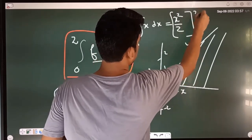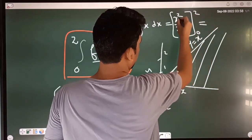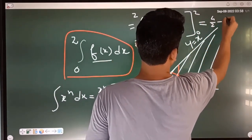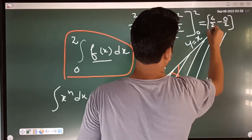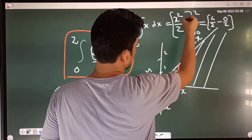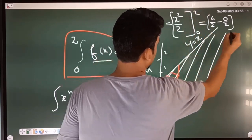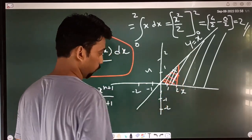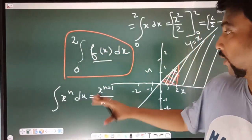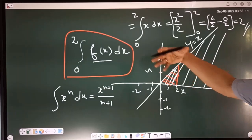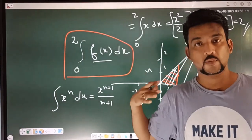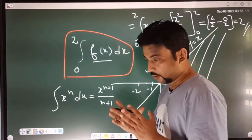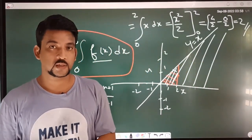This is the limit from 0 to 2. We evaluate: 2 to the power gives us the area of 2. This is the application of integrals. We will do a simple example, and we will have a simple formula to solve the problem.